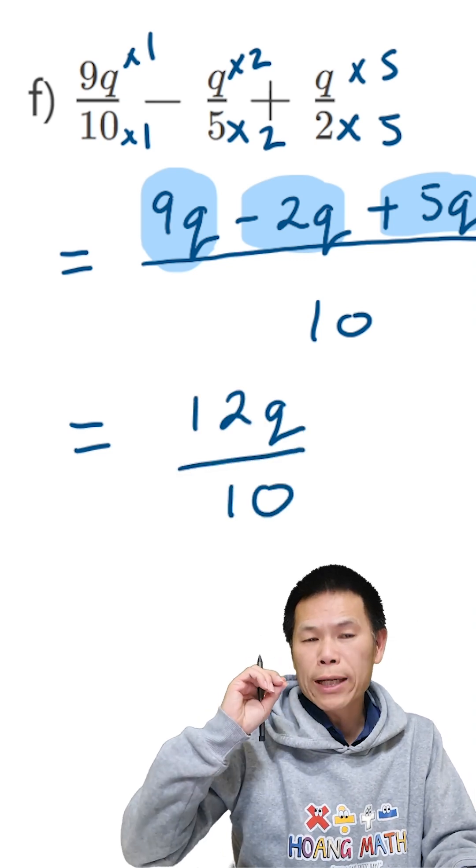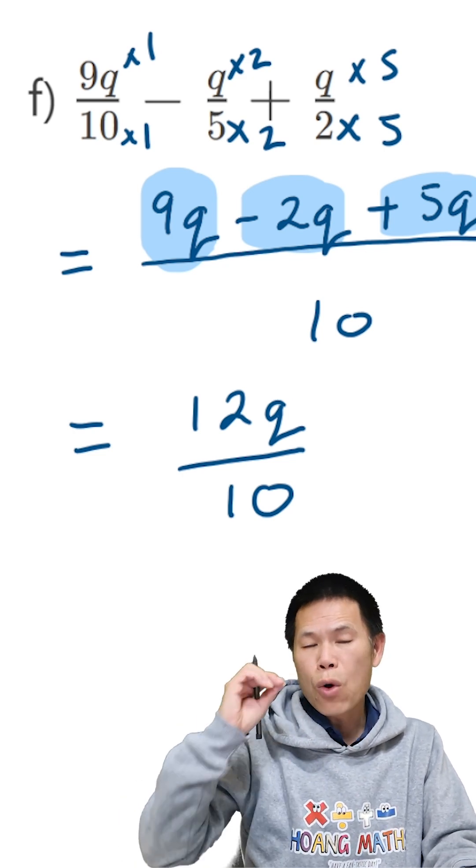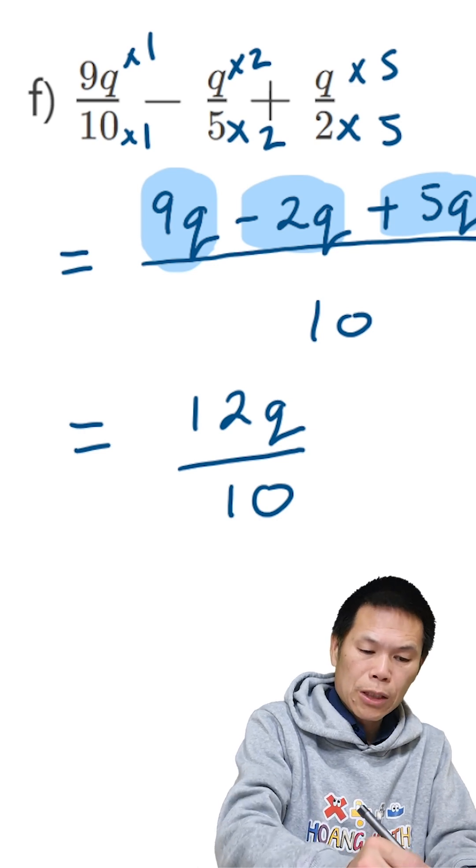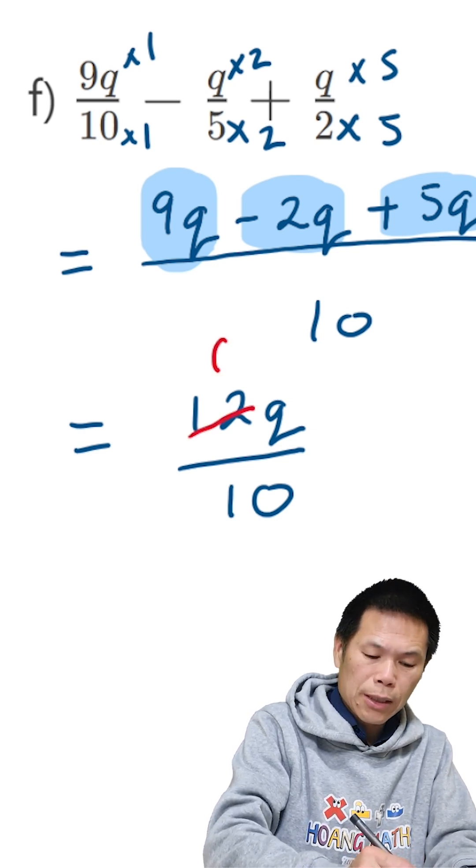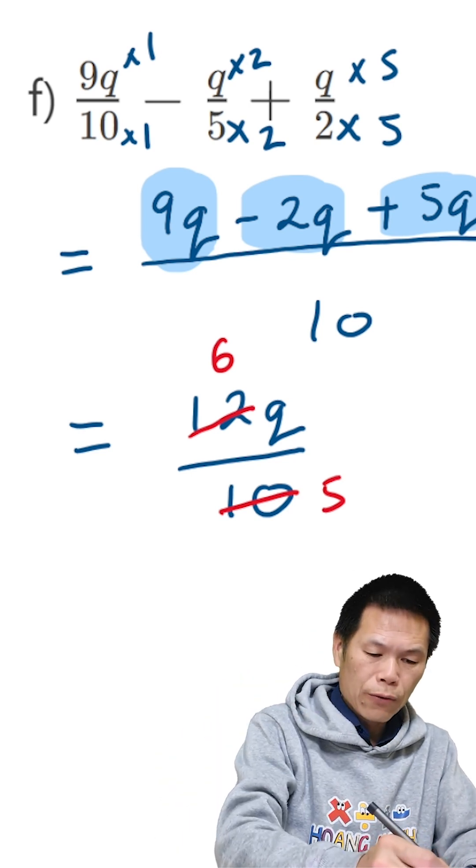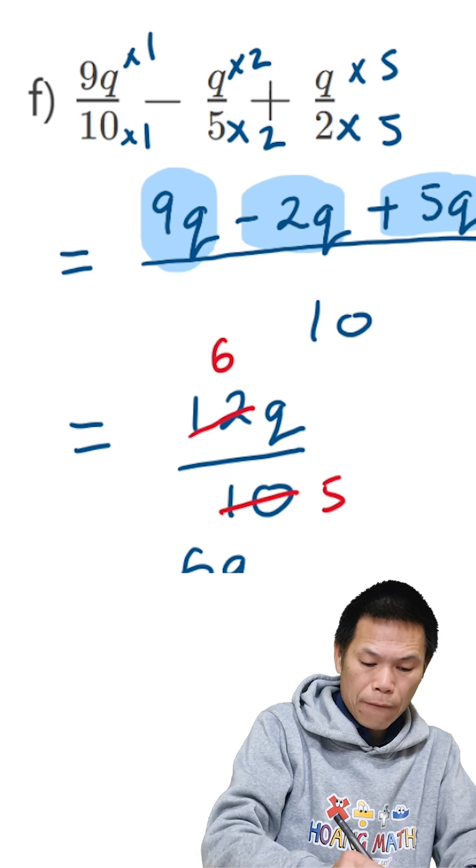But then 12 and 10 both can divide by 2, right? So therefore 12 divided by 2 is 6. Let me just cancel this. 12 divided by 2 gives me 6, 10 divided by 2 gives me 5. So 6q over 5.